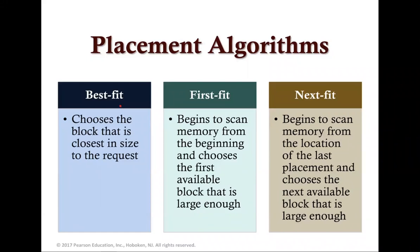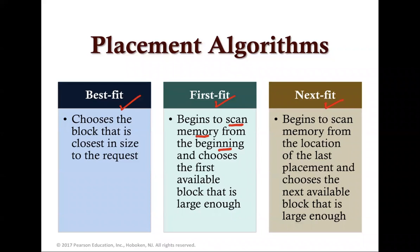Three placement algorithms that might be considered to solve this problem: the first one is called best fit, the second one is first fit, and the third one is next fit. There is also a fourth one which is worst fit. All of these algorithms are limited to choosing among free blocks of main memory that are equal to or larger than the process to be brought in. Best fit chooses the block closest in size to the requested block. First fit scans memory from the beginning and chooses the first available block that is large enough.